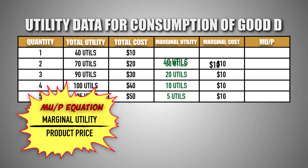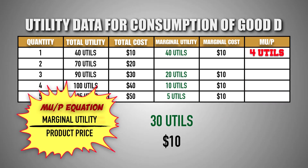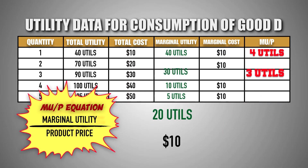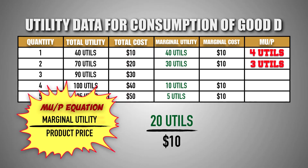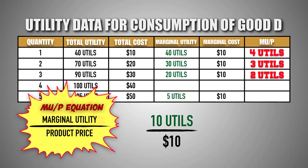For example, after paying $10 for the first unit of good D, the consumer gained 40 utils of marginal utility, meaning the first unit provided 4 utils per dollar. After spending $10 on the second unit, the consumer gained 30 utils of marginal utility, meaning the second unit provided 3 utils per dollar. After spending $10 on the third unit, the consumer gained 20 utils of marginal utility, meaning the third unit provided 2 utils per dollar. After spending $10 on the fourth unit, the consumer gained 10 utils of marginal utility, meaning the fourth unit provided 1 util per dollar.